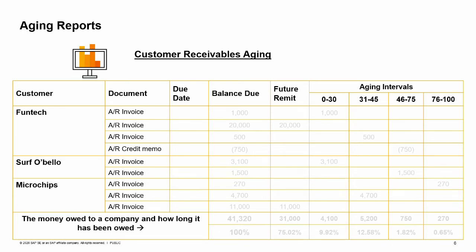You can find the aging reports in the financials module. From the financial reports menu, choose Accounting and then Aging. The report can be expanded to show each transaction, as shown in the image, or collapsed to show aggregated amounts per customer.